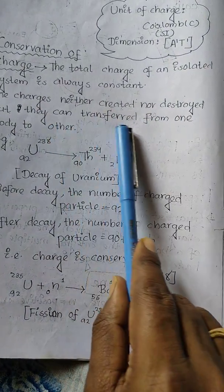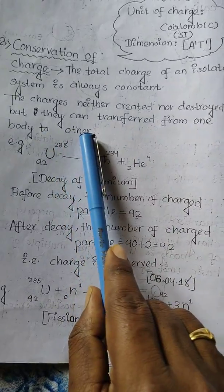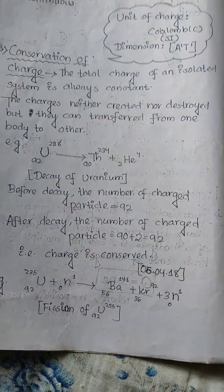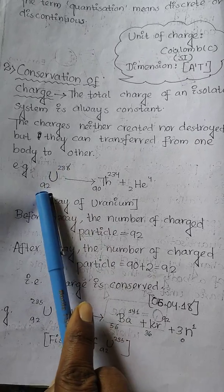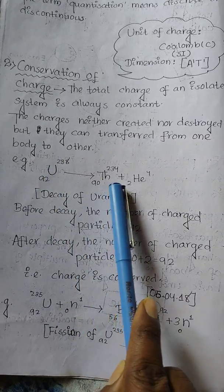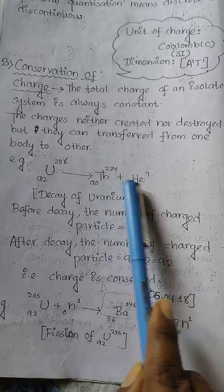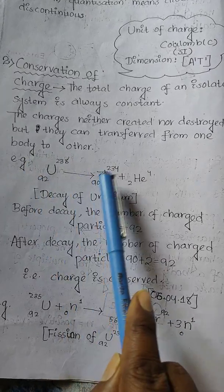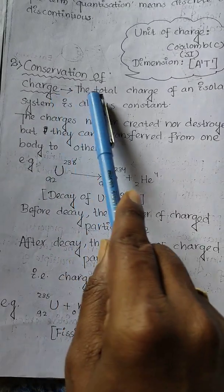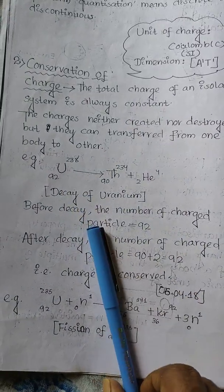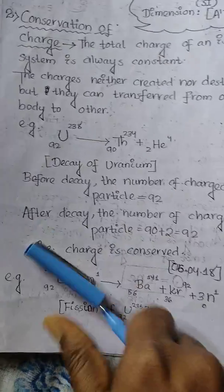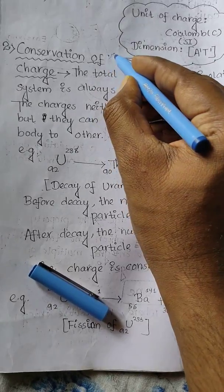The total charge of an isolated system is always constant. Charges are neither created nor destroyed; they can only transfer from one body to another. An example is uranium decay, which is a mathematical example demonstrating the conservation principle of charge.